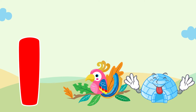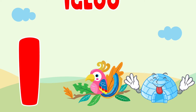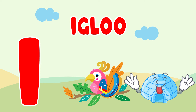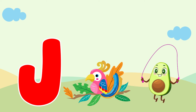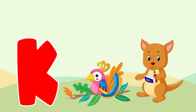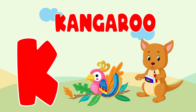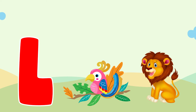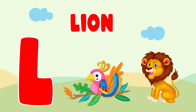I is for igloo, i-i-igloo. J is for jump, j-j-jump. K is for kangaroo, k-k-kangaroo. L is for lion, l-l-lion.